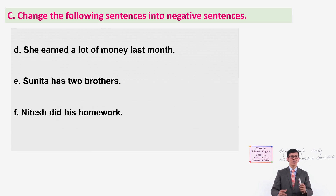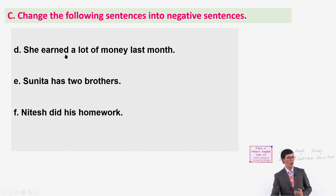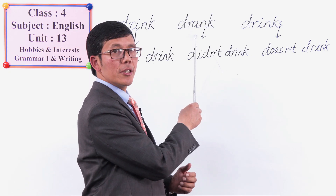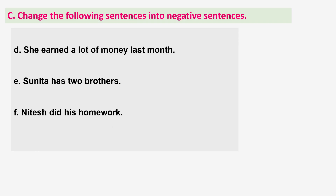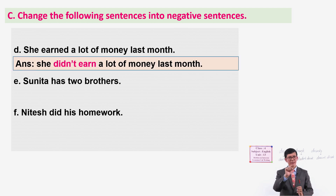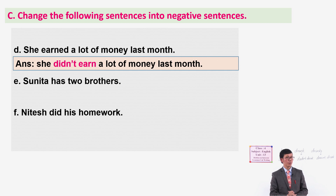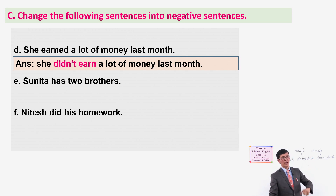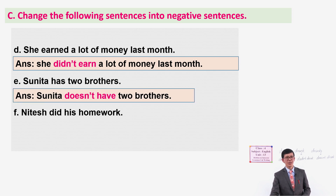Number D: 'She earned a lot of money last month.' Look at the form of the verb 'earned' - this is past form, similar to 'drank,' so the negative is 'She didn't earn a lot of money last month.' Number E: 'Sunita has two brothers.' This is like 'drinks,' so 'Sunita doesn't have two brothers.'